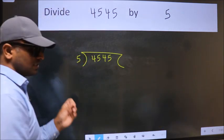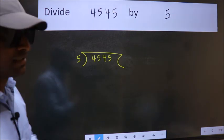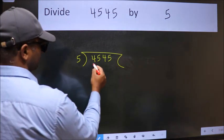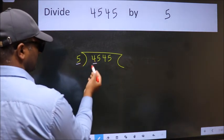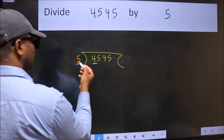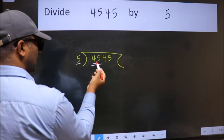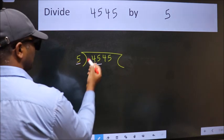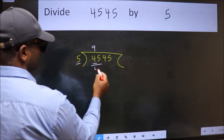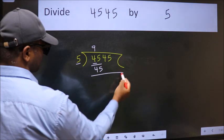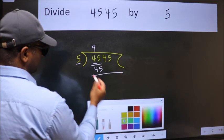This is your step 1. Next, here we have 4, here 5. 4 is smaller than 5, so we should take two numbers: 45. When do we get 45 in the five table? 5 times 9 is 45. Now we should subtract; we get 0.